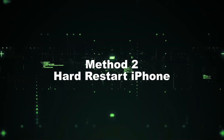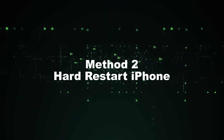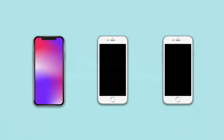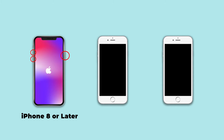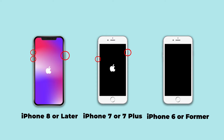Method 2: Hard Restart iPhone. It's one of the easiest ways to solve a whole number of problems for iPhone users. If you use iPhone 8 or later, briefly press and release the Volume Up button, then the Volume Down button, and finally hold the Power button until you see the Apple logo. For iPhone 7 and 7 Plus, hold the Power and Volume Down buttons until the Apple logo appears. For iPhone 6 and earlier, press the Power and Home buttons until the Apple logo is shown.